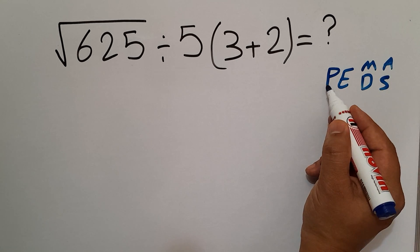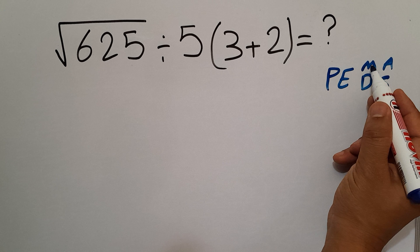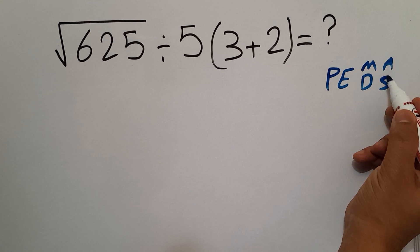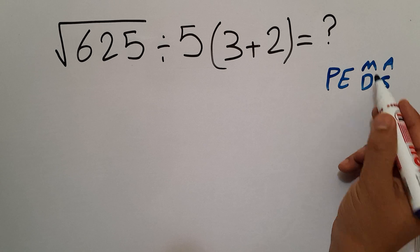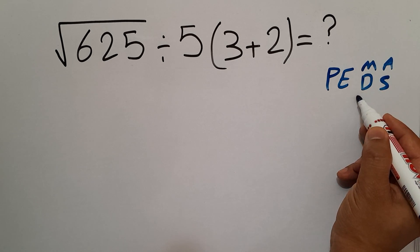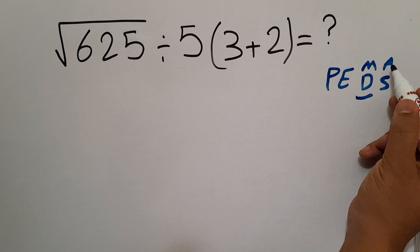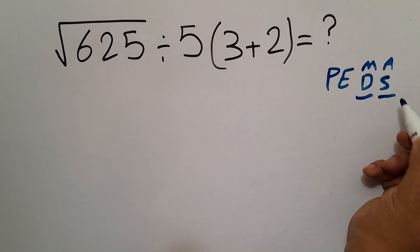We first do parentheses, then exponents, then multiplication or division, and finally addition or subtraction. Remember that multiplication and division have equal priority and we have to work from left to right. And the same applies to addition and subtraction.